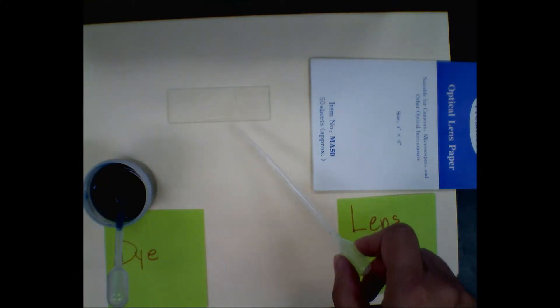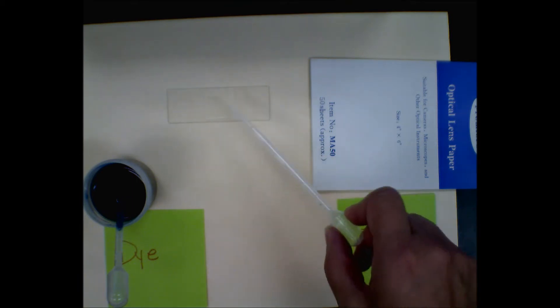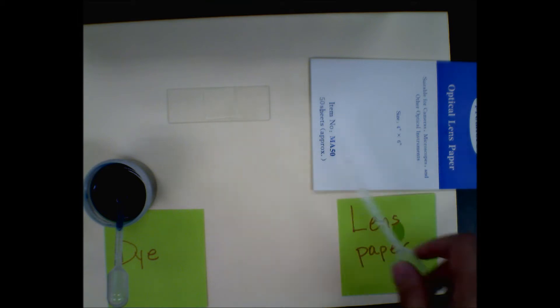Here I have a wet mount slide of some cheek cells. This is colorless because cheek cells don't have any color and it's just been recently made. Here I have lens paper and here I have dye.